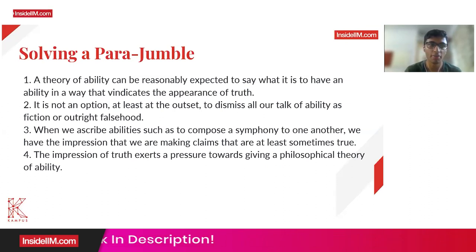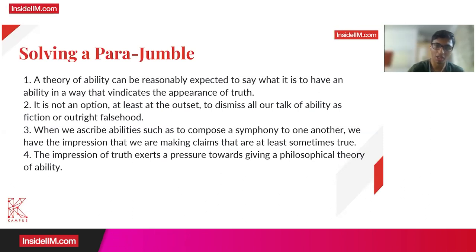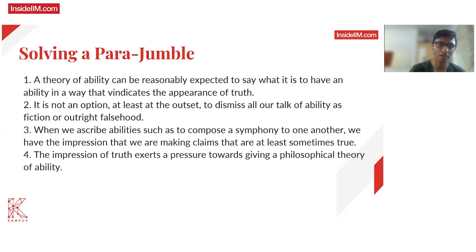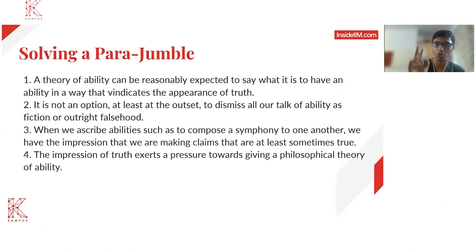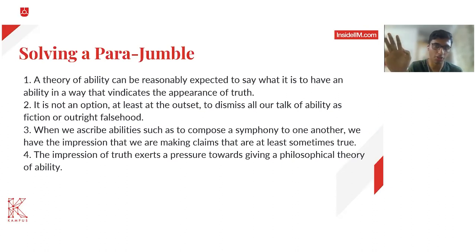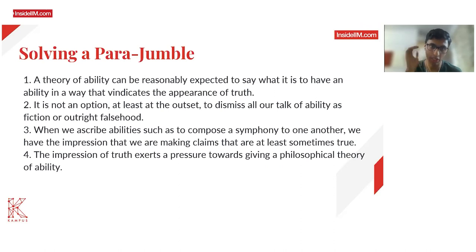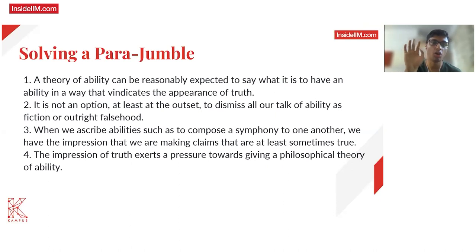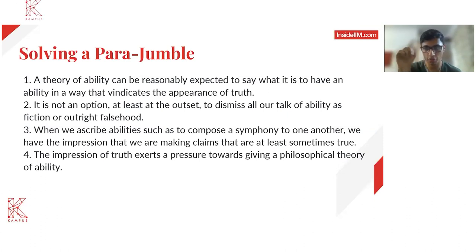Now our job is to see where one and two fit. Looking at one again: 'A theory of ability can be reasonably expected to say something about the appearance of truth.' One seems to be following four, so one has to appear after four. So the order is either three, four, one, two or three, four, two, one. Looking at two: 'It is not an option at least at the outset to dismiss all our talk of ability as fiction or outright falsehood' — two seems to be a concluding sentence, so it cannot follow four.